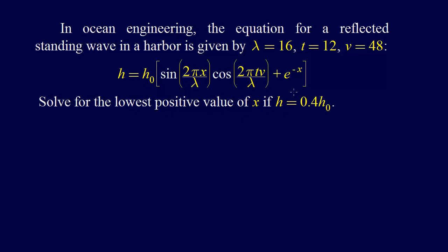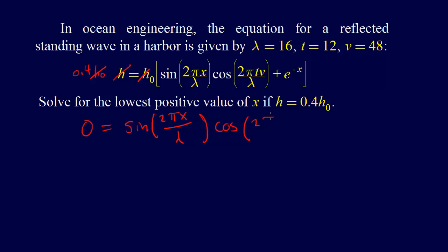To start out with, we're going to have to do a little bit of math. Let's substitute 0.4 h-naught in for h. The h-naught terms cancel, and so then we get: 0 equals sine(2πx/lambda) times cosine(2πtv/lambda) plus e to the minus x, and then we bring the 0.4 to the other side, minus 0.4.